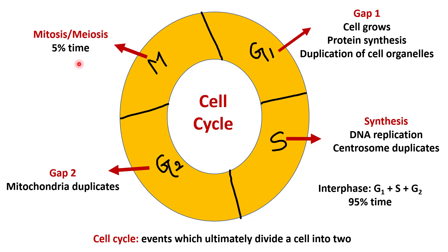So what happens in G1 phase? G1 phase is the first phase of the cell cycle. Here the cell grows in size, protein synthesis takes place, and most of the cell organelles get duplicated.